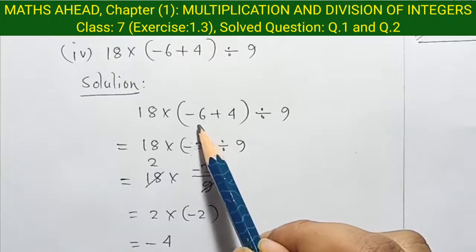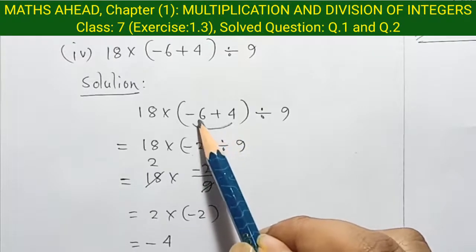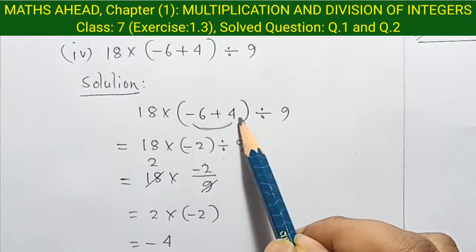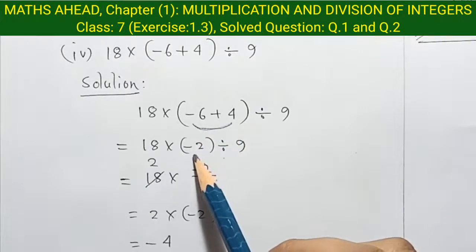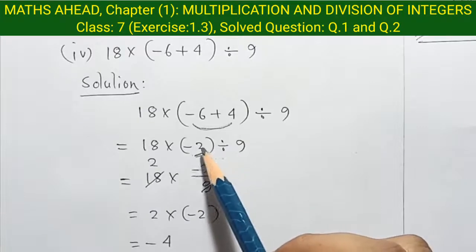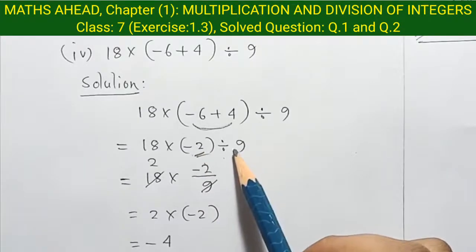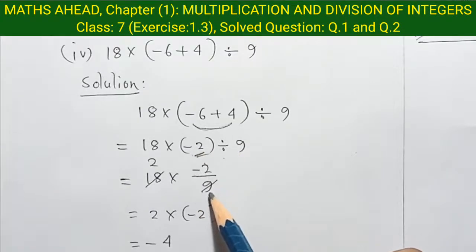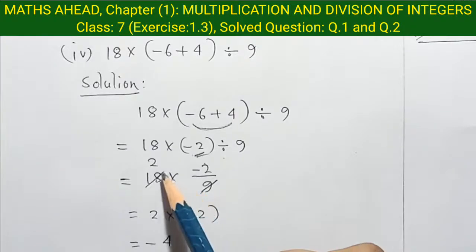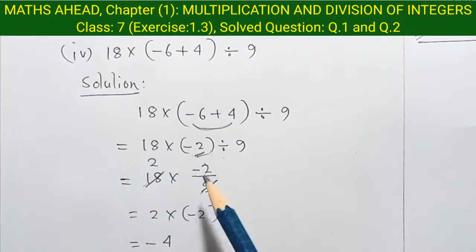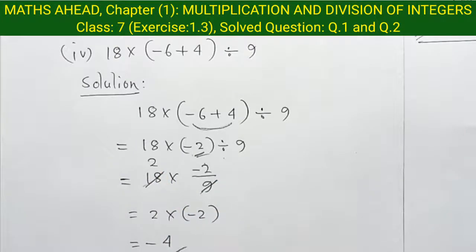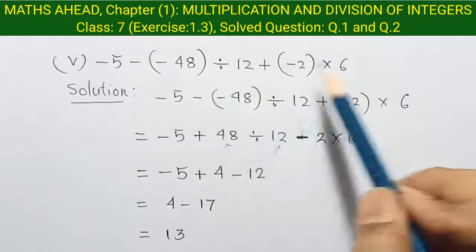First, we need to solve the brackets. So minus 6 plus 4 is equal to minus 2. Now minus 2 is equal to 9. Finally, this 9 and this 18 we cancel by 2. So finally, 2 into minus 2, so the answer is minus 2.